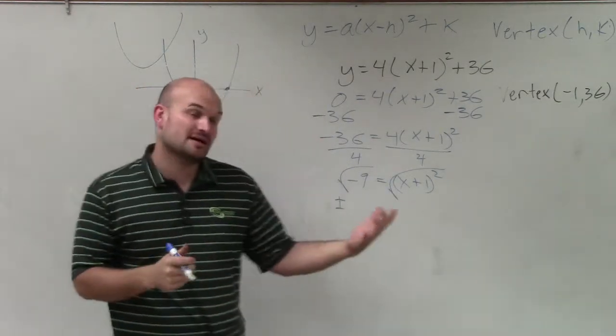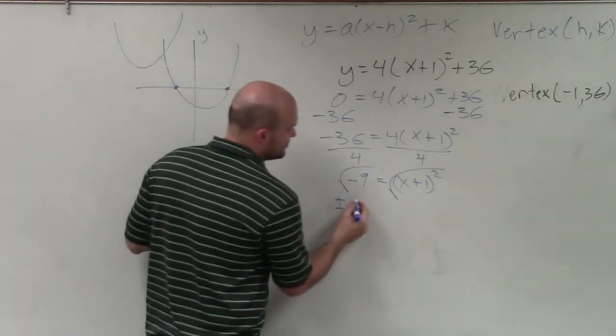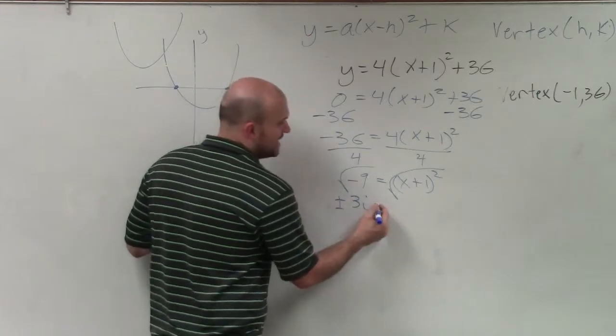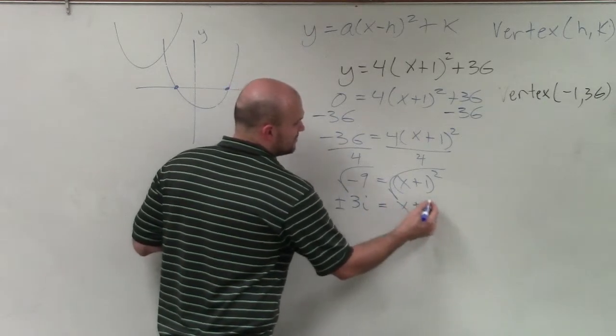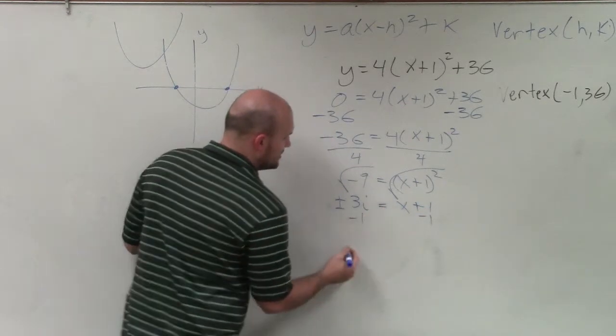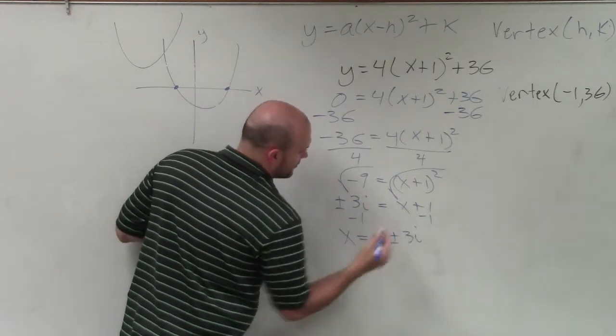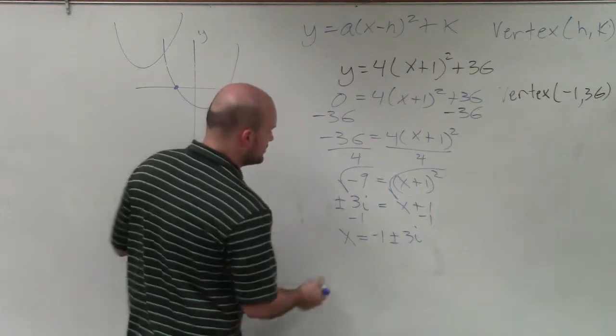We can simplify this to plus or minus 3i, as the square root of negative 1 we represent as i. Therefore, equals x plus 1. Then I can subtract 1. So therefore, my two solutions are x equals negative 1 plus or minus 3i. So there would be your two solutions.